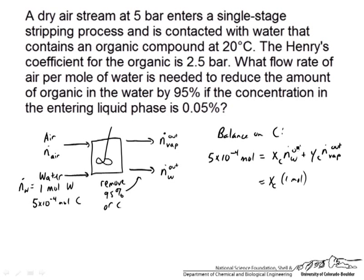N_dot_W out — we are going to assume is still 1 mole. The reason we make the assumption that the liquid flow rate doesn't change is for two reasons. First, contaminant does leave the liquid phase and enter the vapor phase, which can cause the liquid flow rate to decrease. But we expect that to be a pretty small effect, especially because the contaminant has such a small concentration that even if we remove all of it from the liquid stream, it has a negligible effect on our 1 mole.